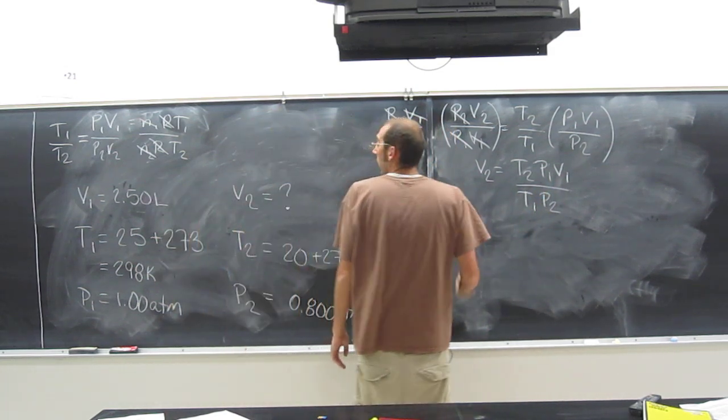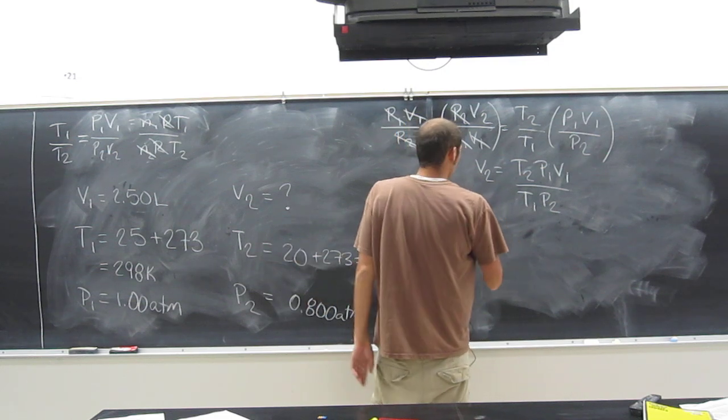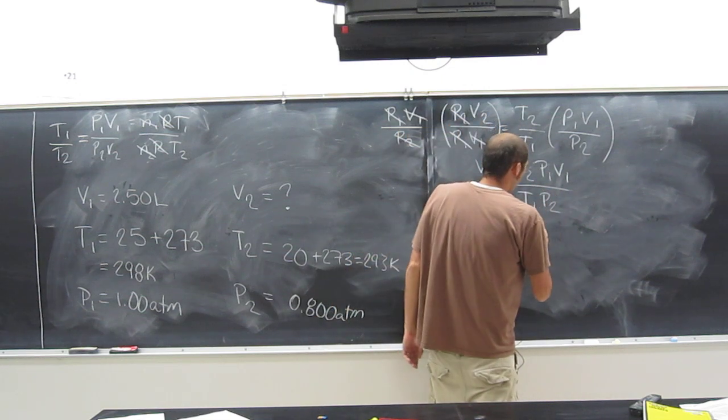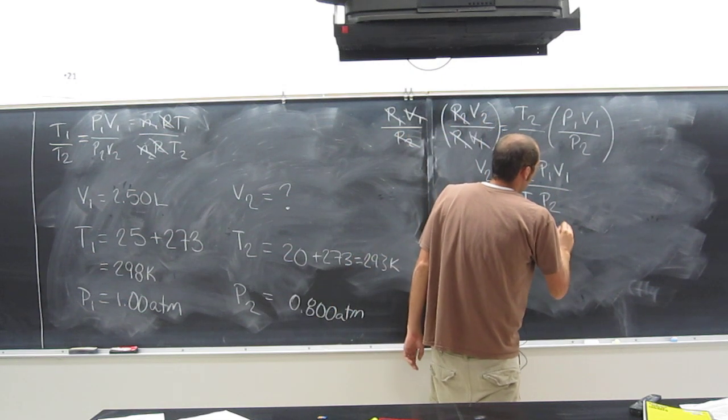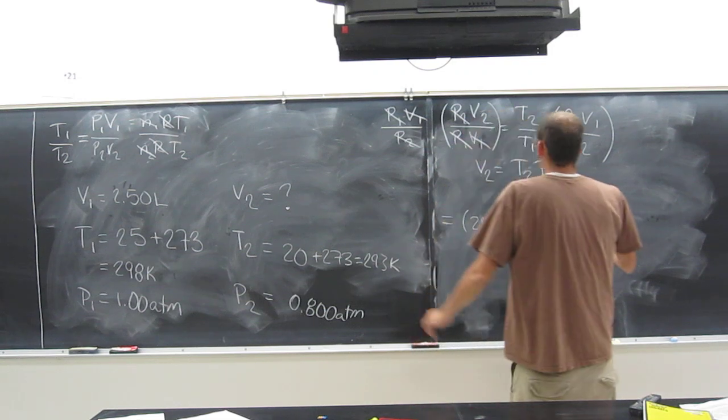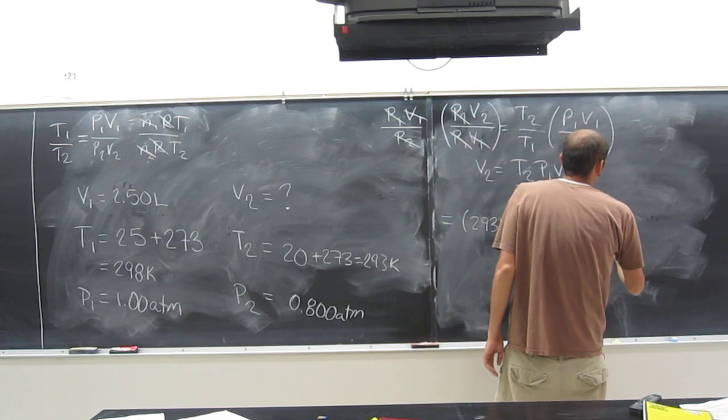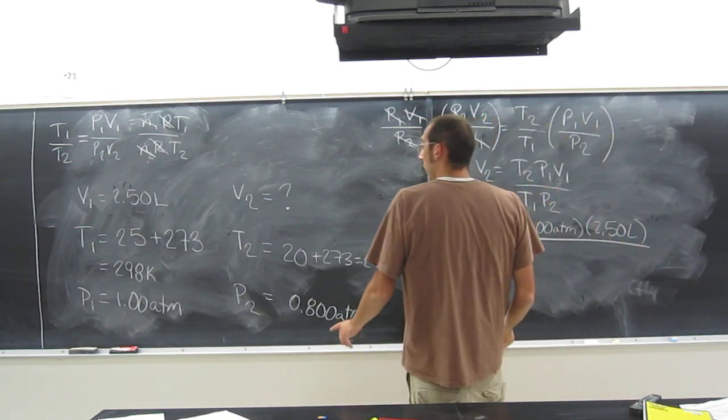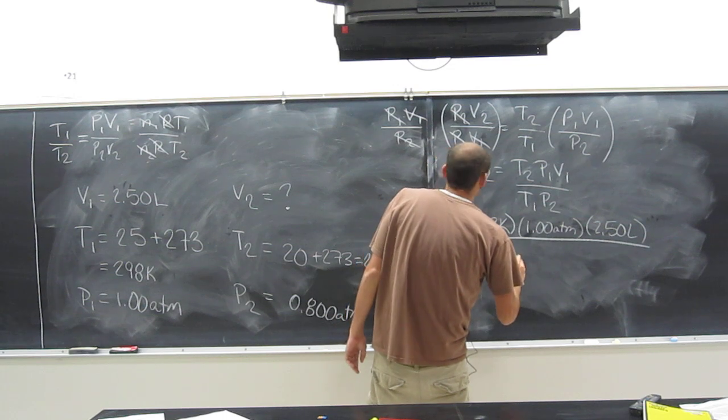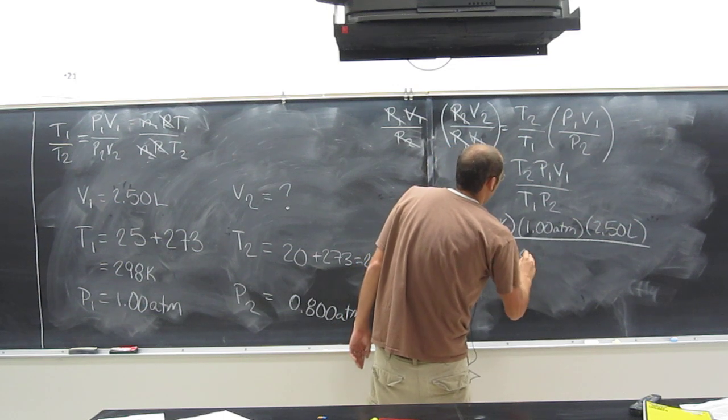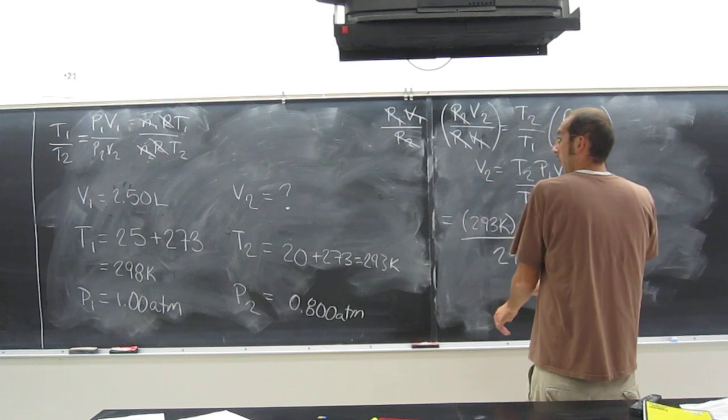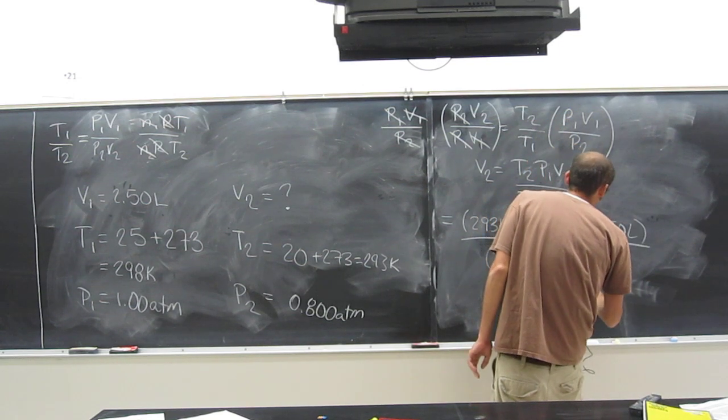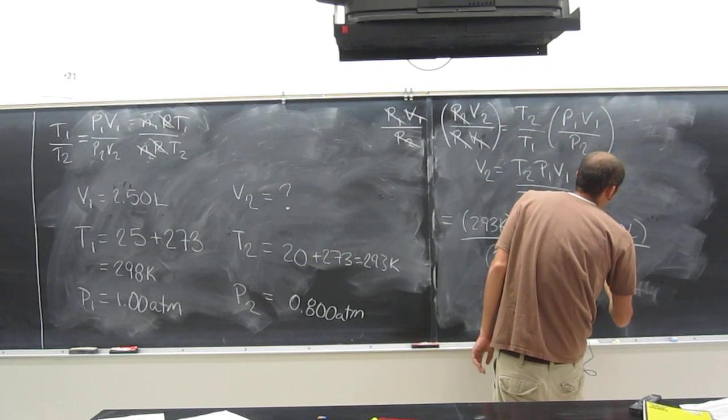Just plug them in. T2, 293 Kelvin. P1, 1.00 atm. V1, 2.50 liters. T1, 298 Kelvin. And P2, 0.800 atm.